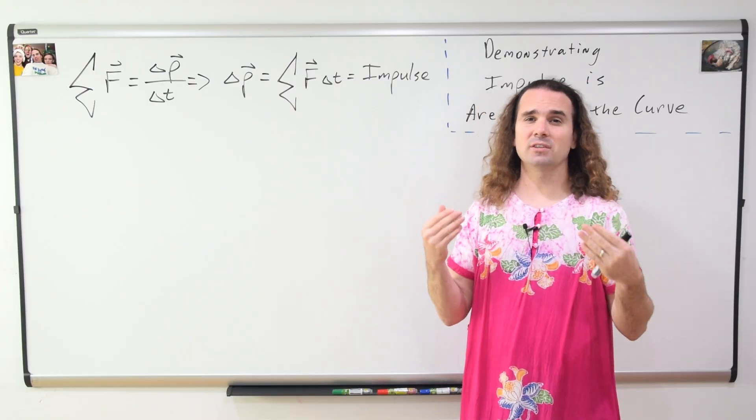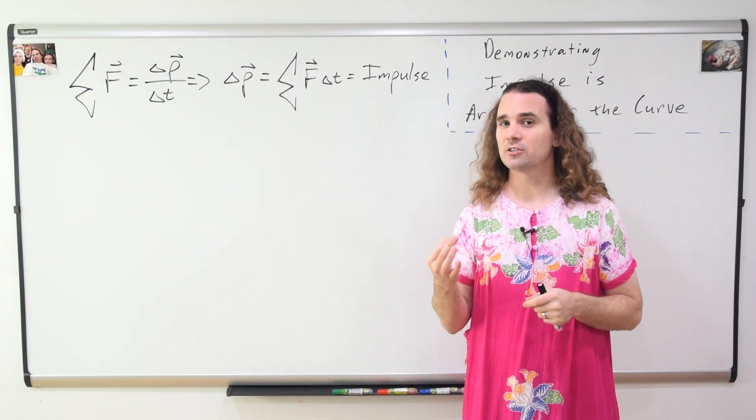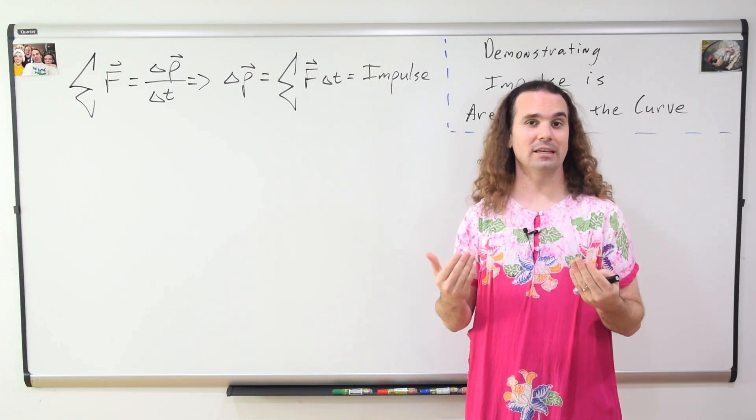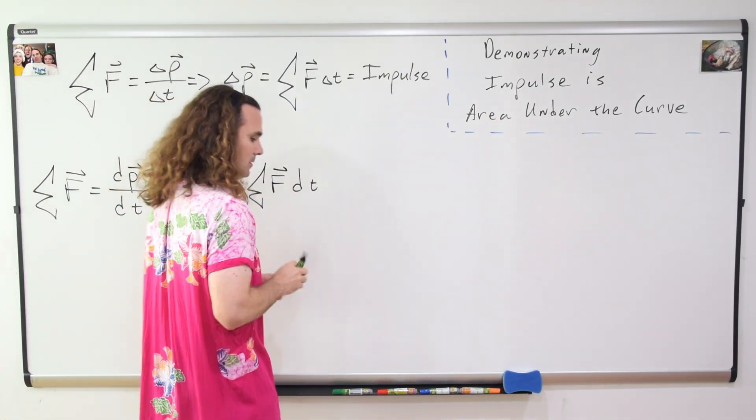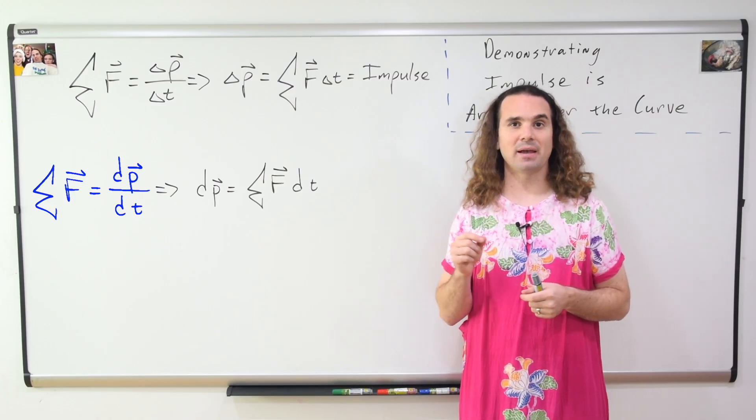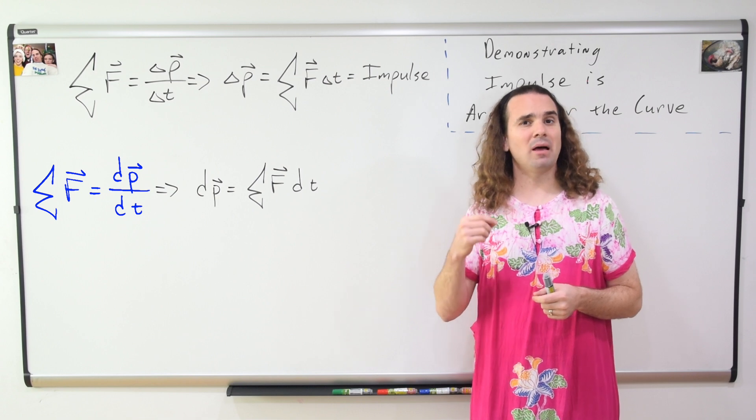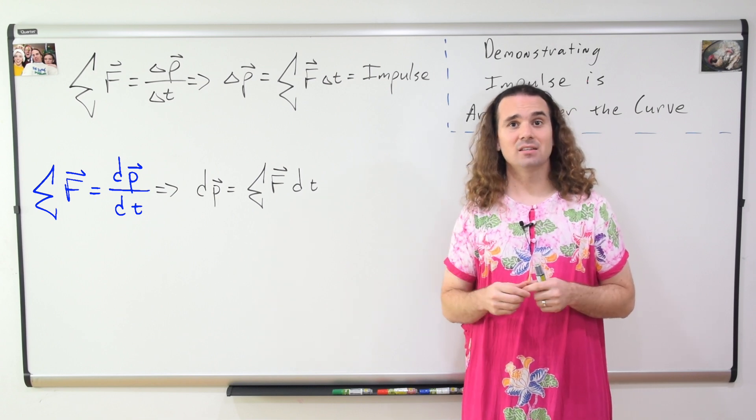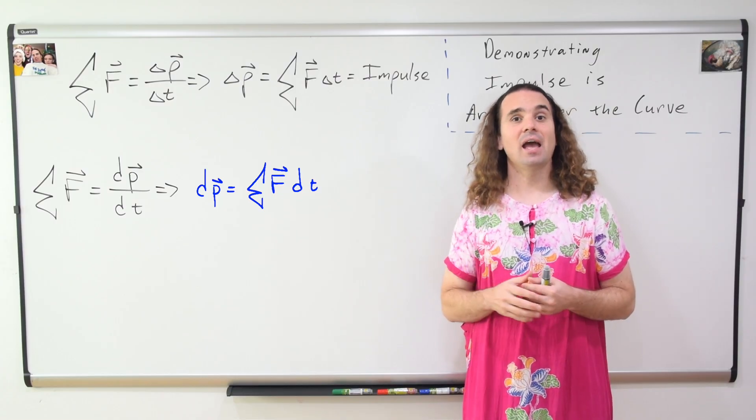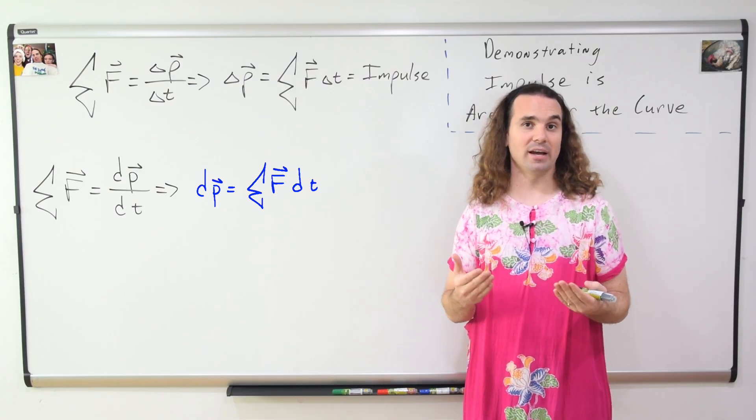Now we are going to do this again, only this time from a calculus perspective. So the force of impact equation using calculus is the net force equals the derivative of momentum with respect to time. And we can multiply both sides by dt to get dp equals the net force times dt. And we can take the integral of both sides of the equation.